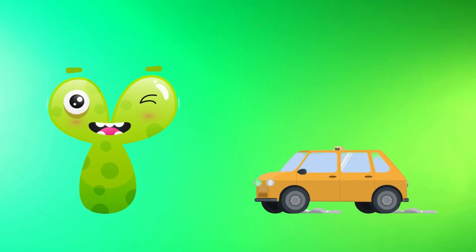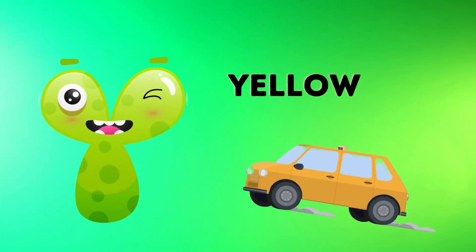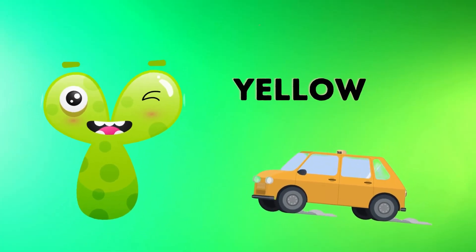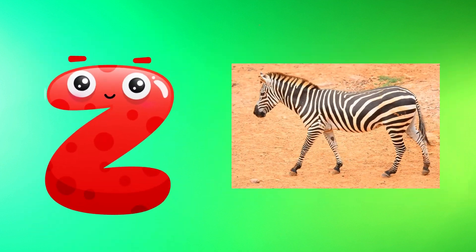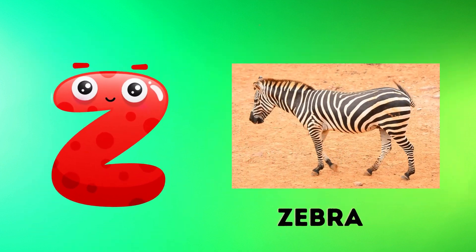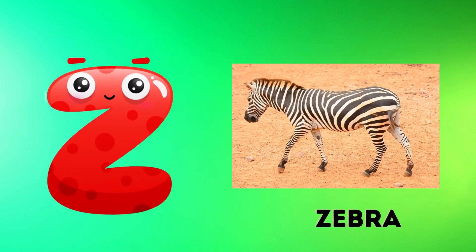Y is for yellow, y-y-yellow. Z is for zebra, z-z-zebra.